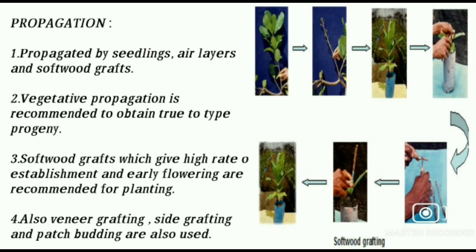Propagation. Cashew is propagated by seedling, air layers, and softwood grafts. Vegetative propagation is recommended to obtain true-to-type progeny. Softwood grafts, which give a high rate of establishment and early flowering, are recommended for planting. Veneer grafting, side grafting, and patch budding are also used.